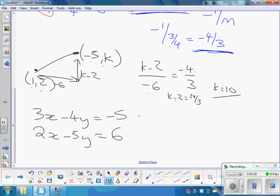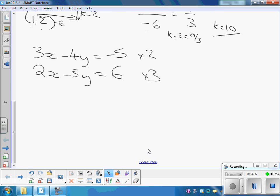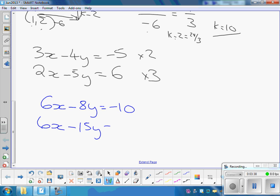What should we do to those? So we times that one by 2 and times that one by 3. Normal sort of thing for rearranging these equations. So what am I going to get? I'm going to get 6x minus 8y equals minus 10. Times this one by 3, 6x minus 15y equals 18.